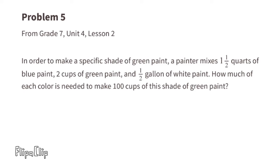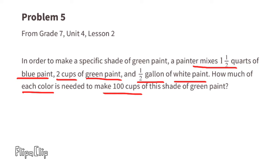Problem number 5, from 7th grade Unit 4 Lesson 2. To make a specific shade of green paint, a painter mixes 1 and a half quarts of blue paint, 2 cups of green paint, and a half gallon of white paint. How much of each color is needed to make 100 cups? The key is to convert all units to cups. 1 and a half quarts of blue equals 6 cups.